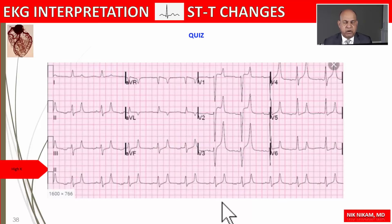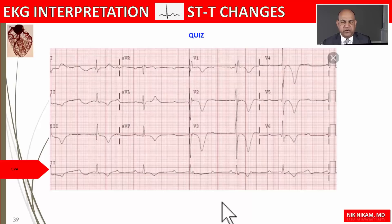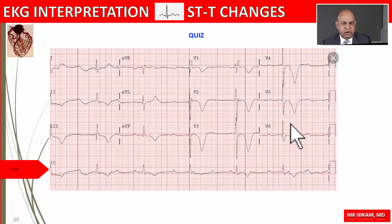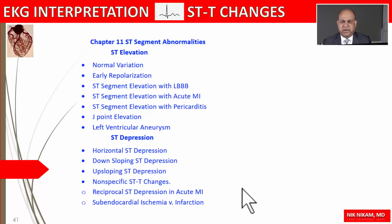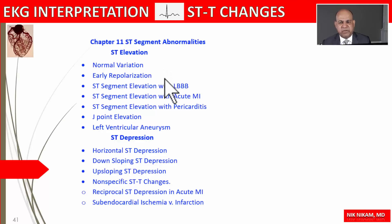What is your diagnosis here? We see giant negative T waves scattered throughout the electrocardiogram. This is representative of either global myocardial ischemia or infarction, or it may be related to a cerebrovascular accident.